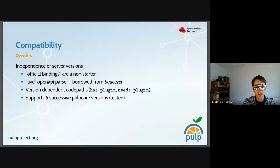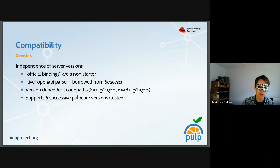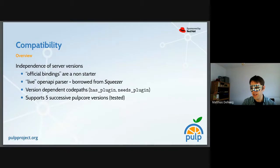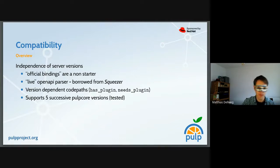Another big goal of the CLI — and I think we managed to accomplish this quite well — is independence of server versions. If you deploy PULP, you may have a production environment and evaluation environments. Sitting at one computer and interfacing with multiple servers that may run different versions of PULP Core and different versions of each plugin, the official bindings are a non-starter here because they are very tightly bound to a specific version of each plugin.